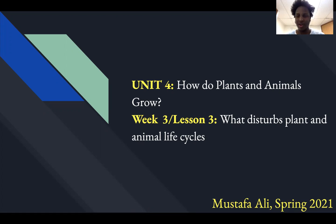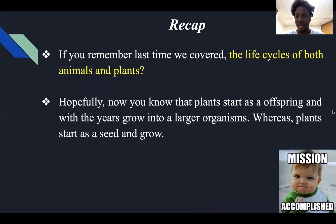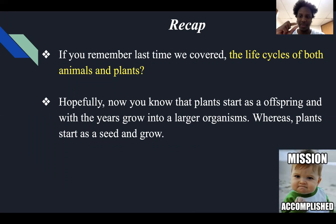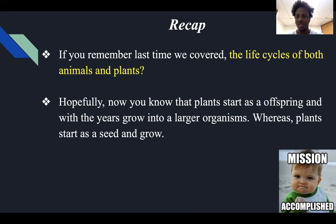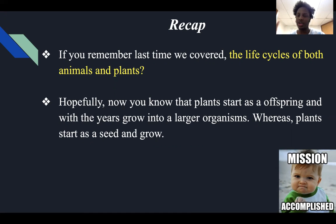Before we start, I hope you're having a great day. So let's start with a recap. If we remember last time, we covered the life cycles of both plants and animals. The example I gave for plants was a regular plant that started off as a seed — we added water, allowed sun to come, and it grew. And for animals, I provided an example of the zebrafish, which began as an embryo, a small baby zebrafish, and then grew over months or days.